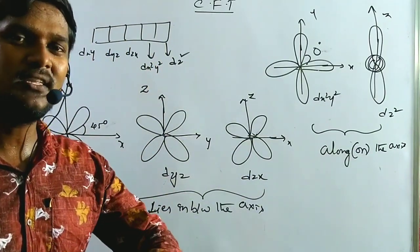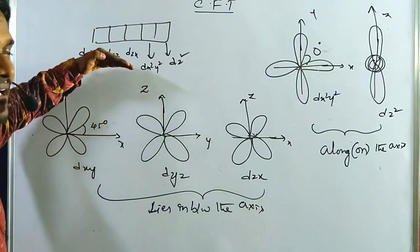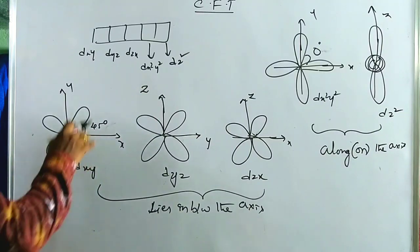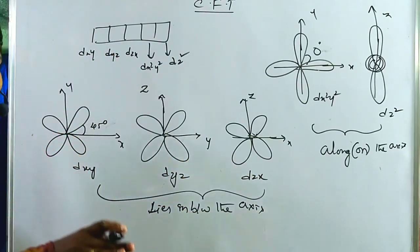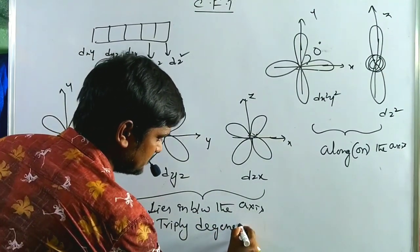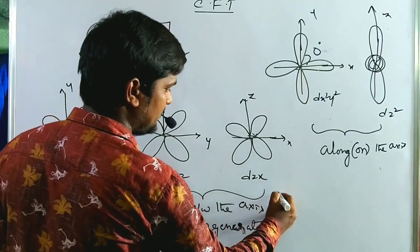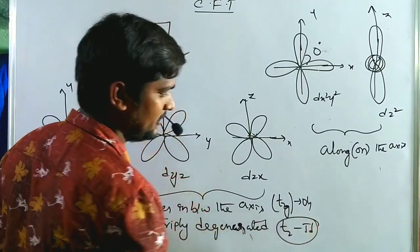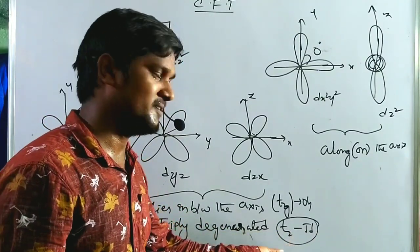The term degenerate means all orbitals have equal energy. When the metal is free from the ligand, all five d orbitals are degenerate. The three orbitals lying between the axes — d(xy), d(yz), d(zx) — are called triply degenerate orbitals, represented as T2G in octahedral complexes and T2 in tetrahedral complexes. We will discuss why the 'g' subscript is absent in tetrahedral splitting later.